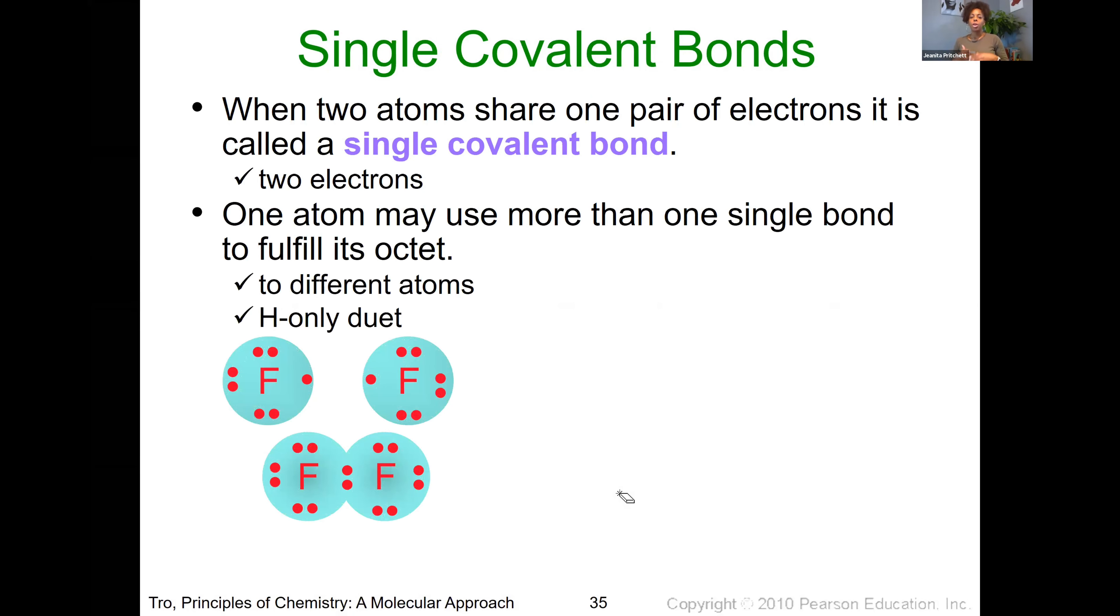So within an atom, there are different types of covalent bonds that may show up. You can have one connecting point between atoms, and that's known as a single covalent bond. So a single covalent bond involves two atoms that are shared between two different atoms. And one atom may use more than one single bond to fulfill its octets. So things like hydrogen that only have one single electron to connect with, they may only be satisfied with one single covalent bond. But for other elements, you could have multiple single bonds that are present to get them up to that octet.